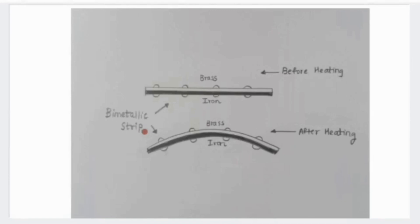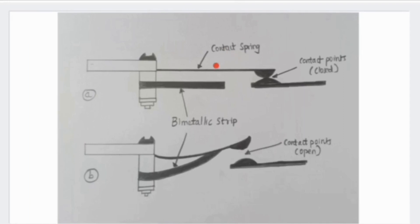This bimetallic strip is made up of two different types of metals. Here I have taken brass and iron with different coefficients of expansion that are bonded together. This means that in the presence of heat, they expand differently. This bimetallic strip is connected to a contact spring through small pins. This is the contact spring.